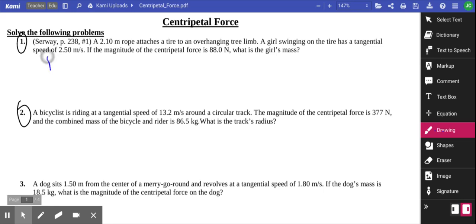we know the radius is 2.1 meters, and we know that the tangential velocity is 2.5 meters per second. And we are going to be looking for M.